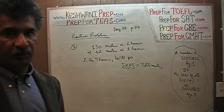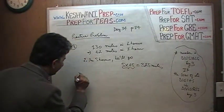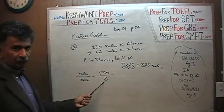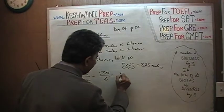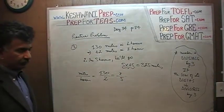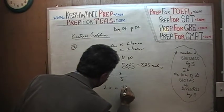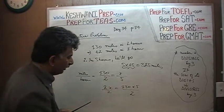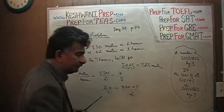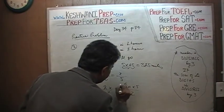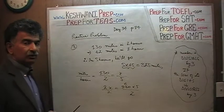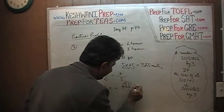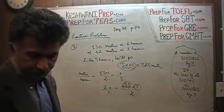Another way to solve this is to set it up as a proportion problem. Set up miles over hours: 130 miles over 2 hours equals x miles over 5 hours. Cross-multiply: 2x equals 130 times 5, so x equals 130 times 5 divided by 2. Divide 130 by 2: how many 2's in 13? Six, with remainder 1; that 1 joins the 0 to make 10, which has five 2's. So 130 divided by 2 is 65, and 65 times 5 is exactly what we calculated before — 325 miles.